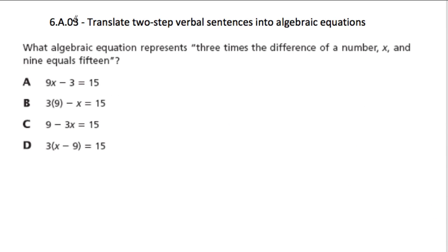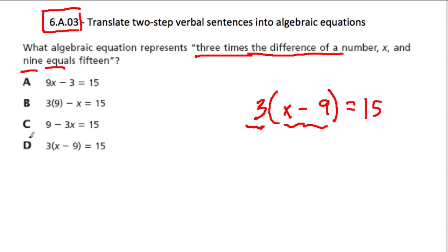And we do transition over to this standard, which is really also a seventh grade standard. So a lot of the samples for this we'll see in our next videos on verbal sentences or expressions. Here we have what algebraic equation represents three times the difference of a number x and 9 equals 15. So three times the difference of a number x and 9 equals 15. Because they're implying that the difference of a number and x right here is what's being multiplied by 3. It's 3 times this difference. So the difference takes precedent, because you want to figure that out first, and then multiply it by 3. And then we have equals 15. So there's our equation. And we have it right here as D.